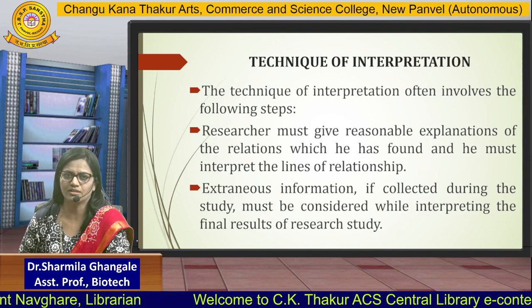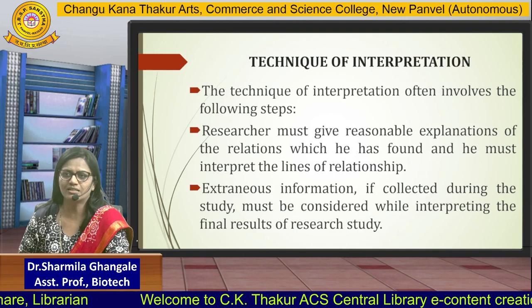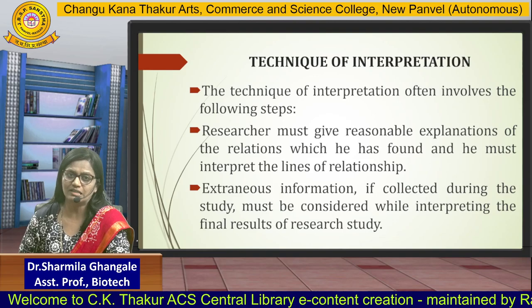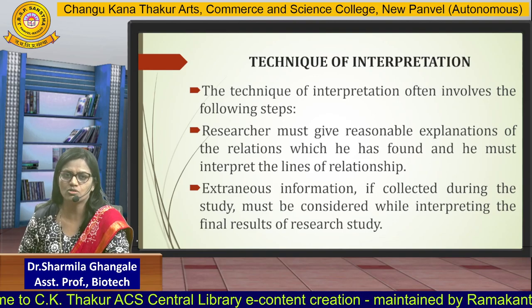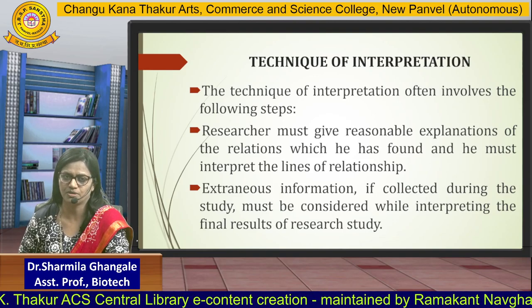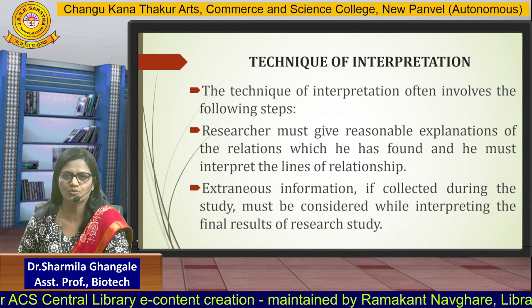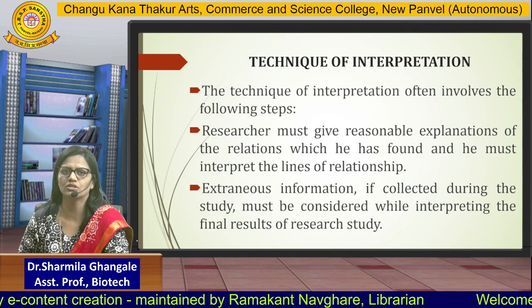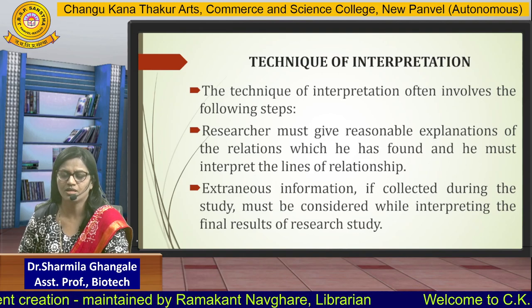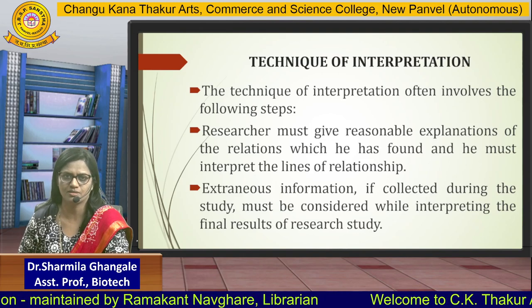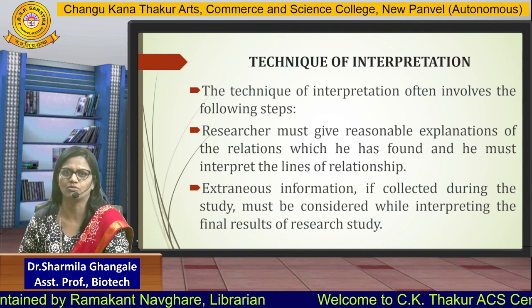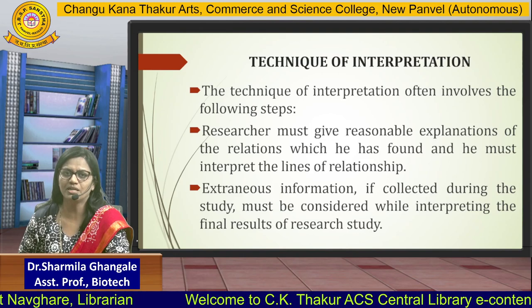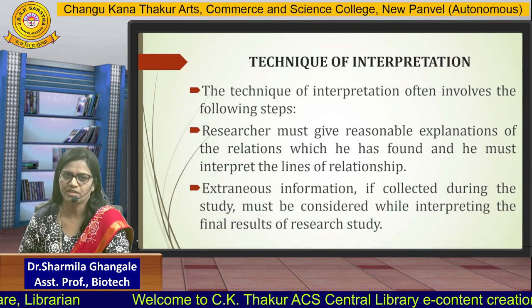As mentioned earlier, there are certain variables which control each other, and among those variables they also establish a relationship — one controls the other, and that is how things proceed. The researcher must give reasonable explanation about certain variables, the relationship between the variables, how that relationship has been found out, and how you can interpret that line of relationship — these are the main important techniques to follow.